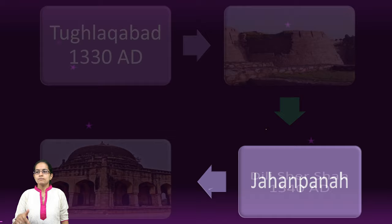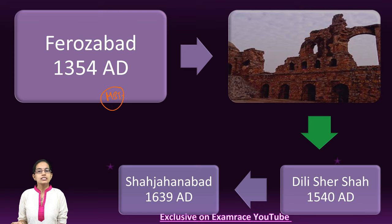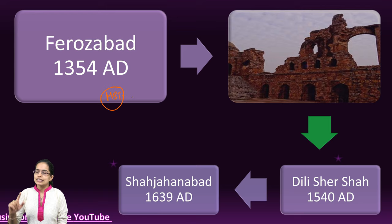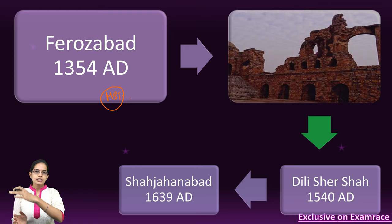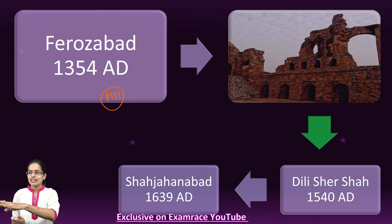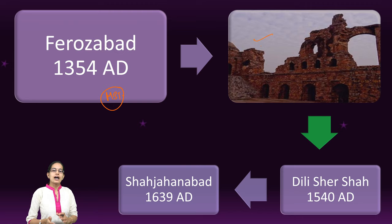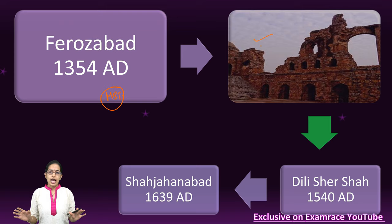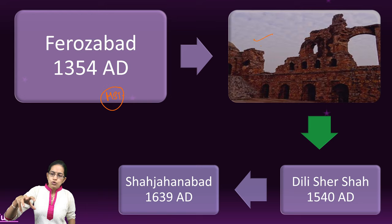The next city is Firozabad, established by Firoz Shah Tughlaq, nephew of Muhammad bin Tughlaq. Firozabad was considered the fifth city of Delhi, created on the banks of the Yamuna — the region of present-day Firoz Shah Kotla stadium. Ashokan pillars were planted in this region, large-scale restoration activities were carried out including repair of Qutub Minar, and the city was developed in a planned and systematic fashion.